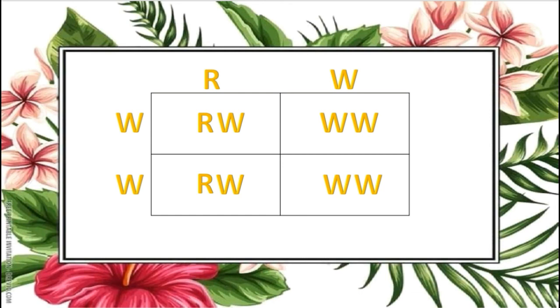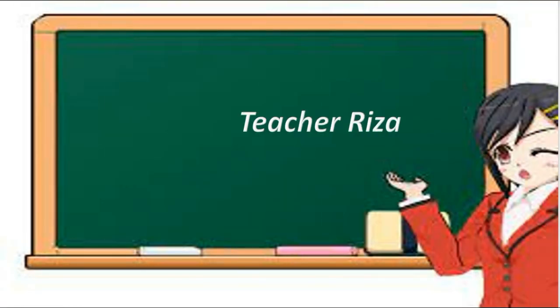Phenotypic ratio is 2 is to 2, or 50% pink flower and 50% white flower. That would be all for now. I hope this helps you out. Have a great day.